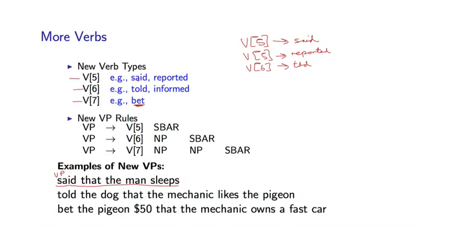If we look at this rule, this says that a verb of type 6 can be followed by an NP and an S-bar to form a VP. And that's a phrase like told the dog that the mechanic likes the pigeon. So this is an S-bar. It's formed by the word that, which is a complementizer, followed by a sentence, and this is an NP. And told can actually take two arguments, firstly an NP and secondly an S-bar to form a verb phrase. So this is who's being told, and this is what is being told.